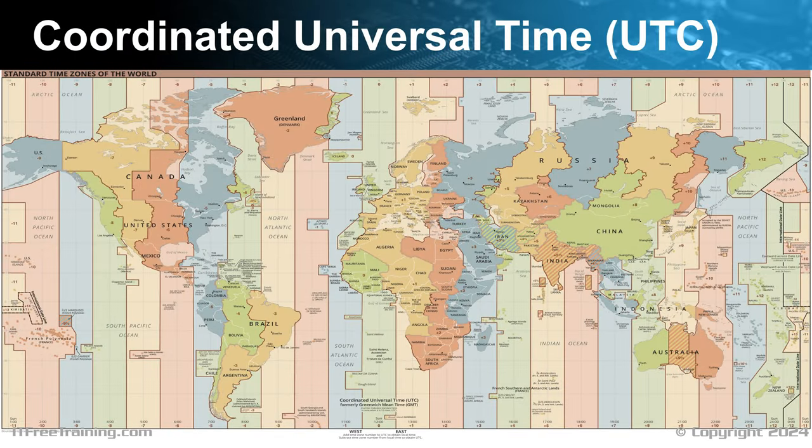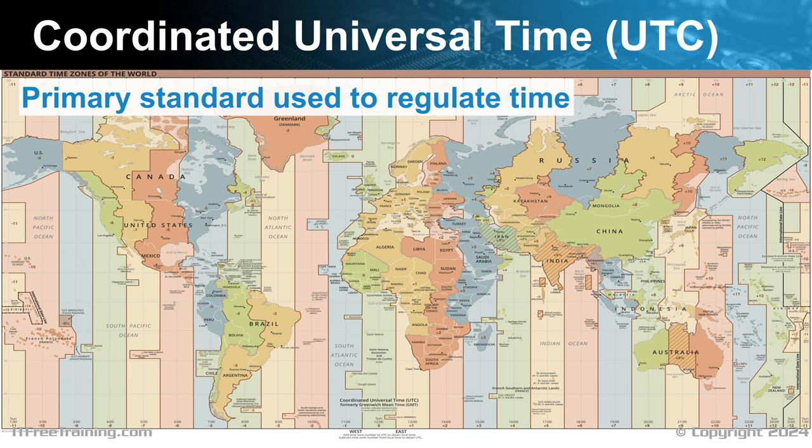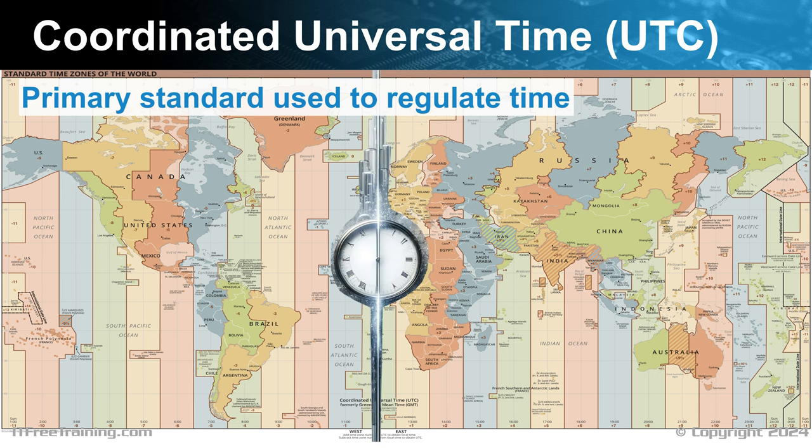Before looking at time, I first need to look at Coordinated Universal Time, or UTC. This is the primary standard used to regulate time in the world. There is not too much to know about it other than it is the central reference point. UTC does not belong to a specific time zone or geographical location, but it is the reference point that the time zone offset is applied to in order to get local time.